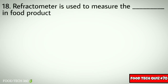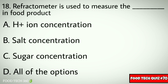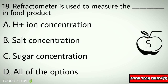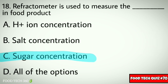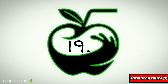Q18. Refractometer is used to measure the dash in a food product. Options: A. H+ ion concentration, B. Salt concentration, C. Sugar concentration, D. All of the options. Correct answer: C. Sugar concentration.